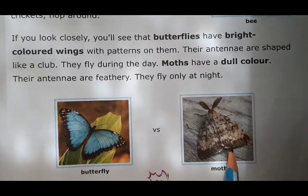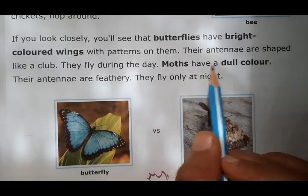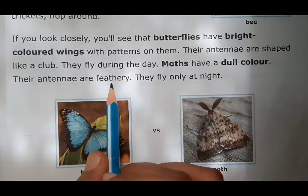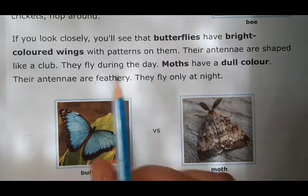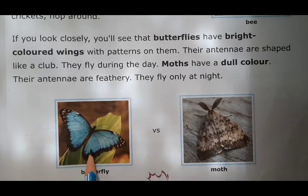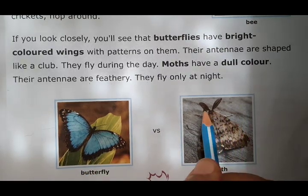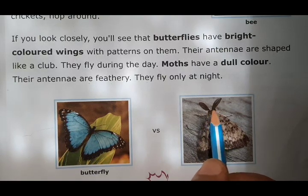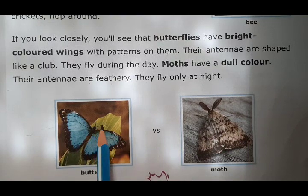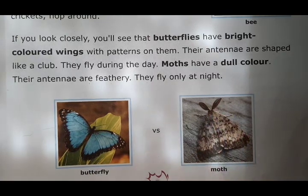Now here is another insect — we are going to compare it with the butterfly. The next insect is moth. Moths have a dull color, their antennae are feathery, and they fly only at night. You can see here the color of moth is dull, while the color of butterfly is bright. The antenna of moth is feathery, while the butterfly antenna is like a club. And butterfly flies during the day, while moth flies at night.